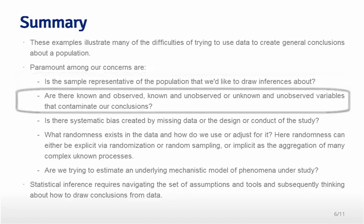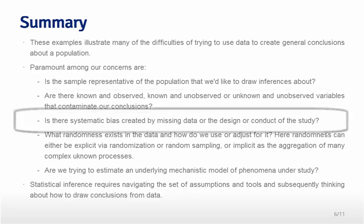In our HRT example, we talked about a clinical trial. The clinical trial randomization tries to balance unknown and unobserved variables that might contaminate our conclusions. Something we did not talk about, but might be a problem, is missing data. In our HRT example, imagine if you did a clinical trial and those who received the placebo were aware that they received the placebo — your conclusions might be very biased because in the placebo condition the sickest people were all dropping out.